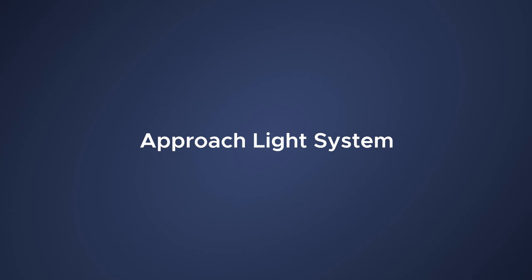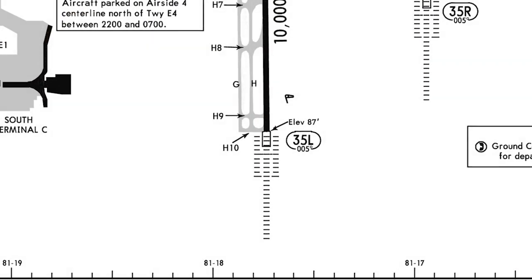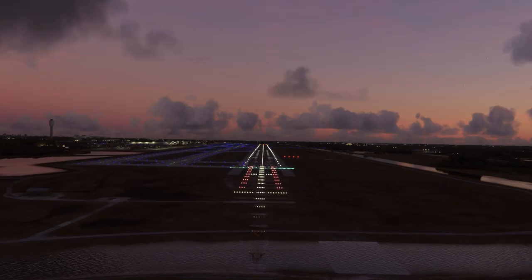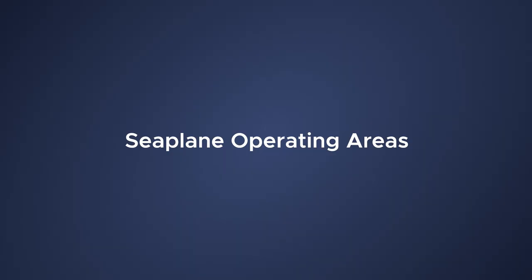Let's head back to Orlando and check out approach lighting symbology. The configuration and length of all known approach light systems are shown. This could be an entire lesson on its own — we'll cover runway lighting in detail in a future episode.